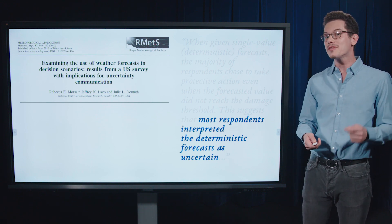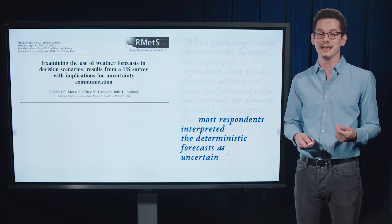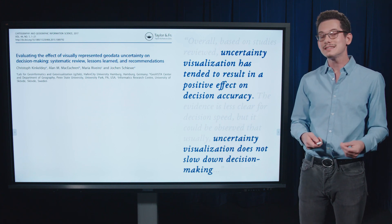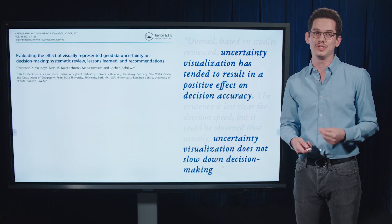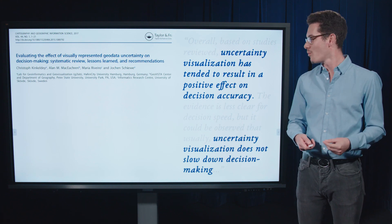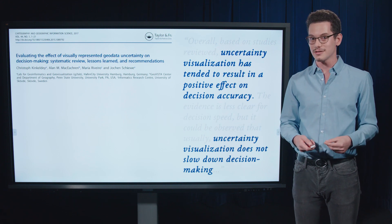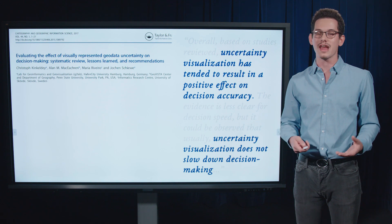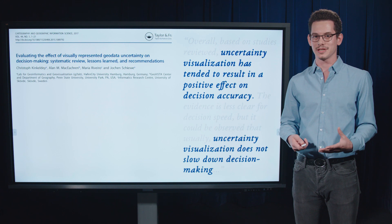And there's yet another reason why we want to show the uncertainty in our forecast products, and it's that showing it tends to improve the accuracy of decisions made using that forecast, while not slowing down that decision making as well. So this is found in a review study of over 80 publications about decision making and uncertainty visualization.